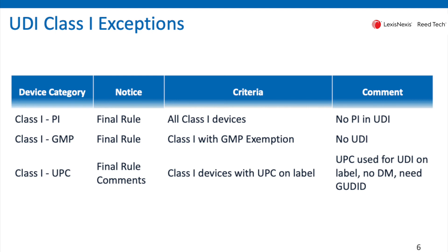The other very broad exception is that all Class 1 devices only need to have the device identifier portion — the production identifier is not required to be in the UDI. And in the event you distribute your product in a retail environment and make use of a UPC on your particular label, then that UPC identifier can be used as the device identifier and serve as the UDI. No direct marking is required for those particular devices in retail, but you still do need to make a report to the FDA's GUDID database.